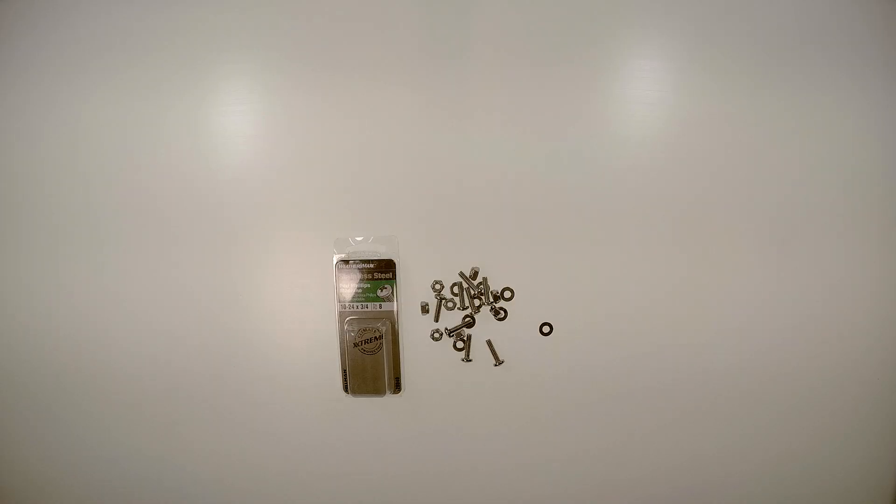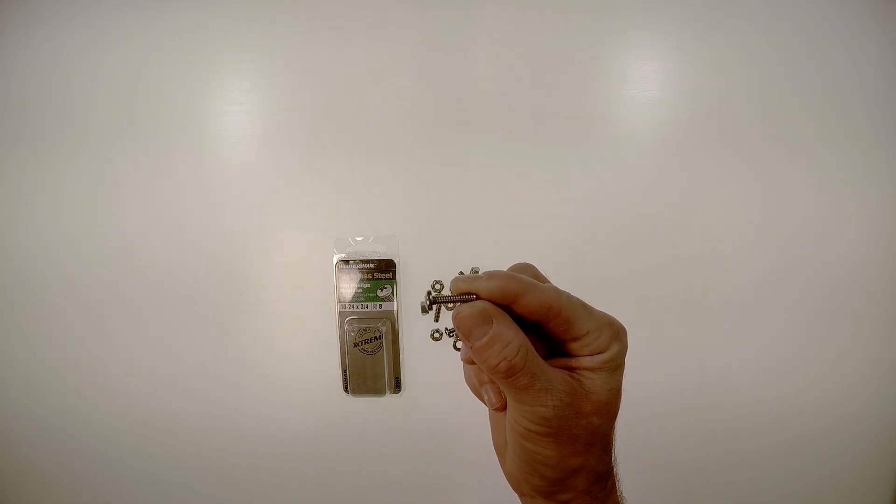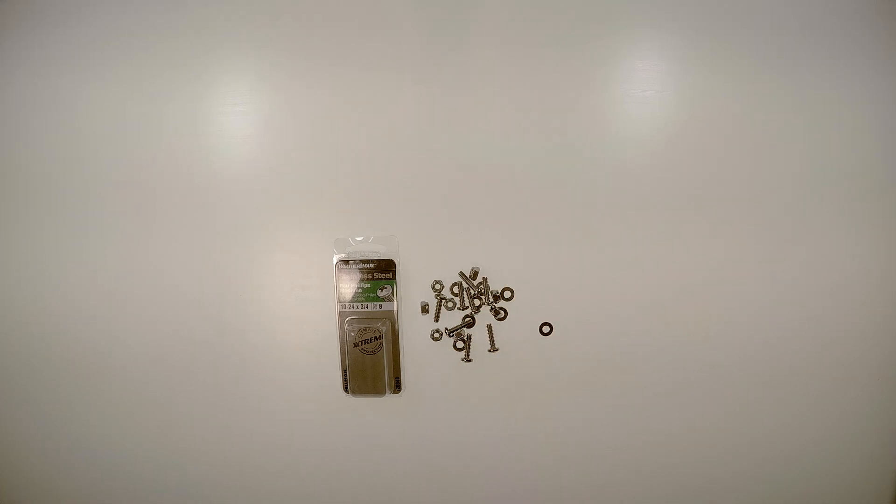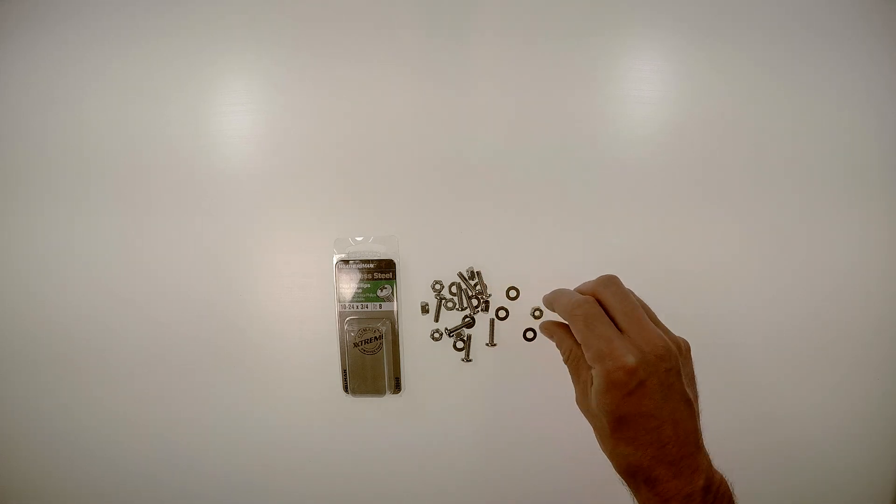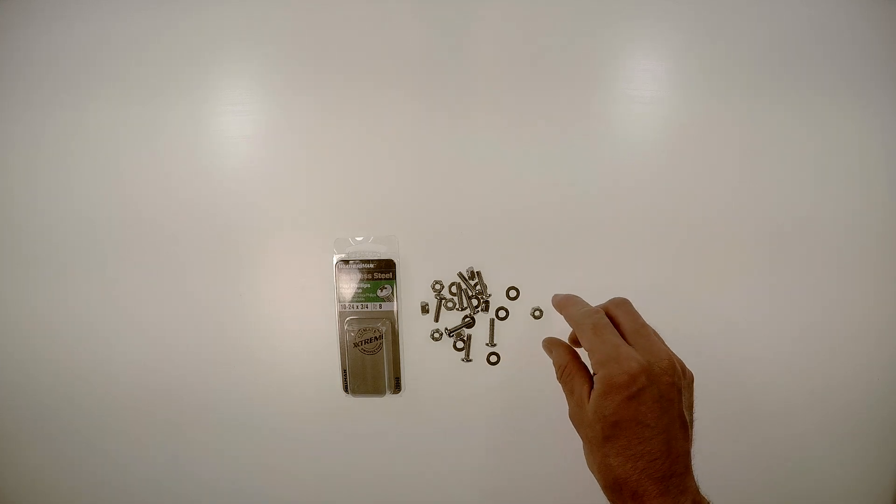The hardware that holds this all together are these 10-24 by three-quarter inch stainless machine screws. For the 7-inch dome I built, I used 8 around the circumference. If I had it to do over again, I would use probably 10. If you have a smaller dome you probably can get away with 8. Eight was a bare minimum for a good seal on my dome. The washers and the nuts are also stainless, especially if you use this in salt water. The washers are number 10 washers, and these are nylock nuts, so they're self-locking.